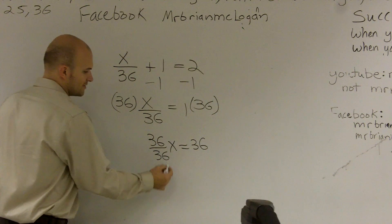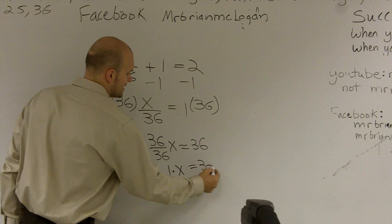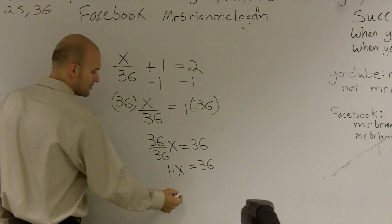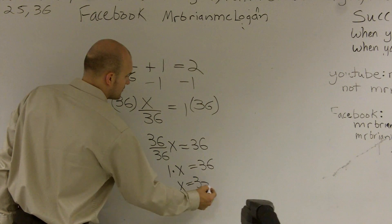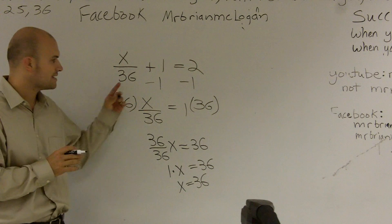Well, 36 divided by 36 is 1 times x equals 36. We never have to write 1 times a number. So that's how we get it. So that's how you solve a two-step equation.